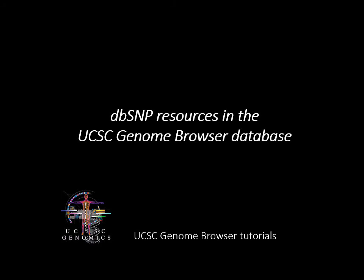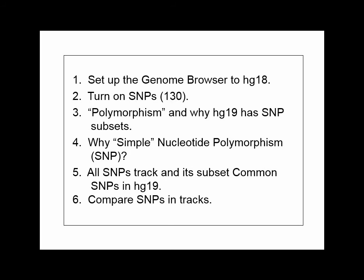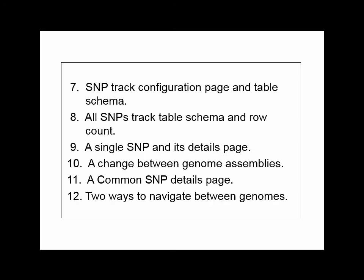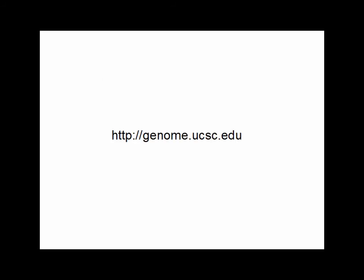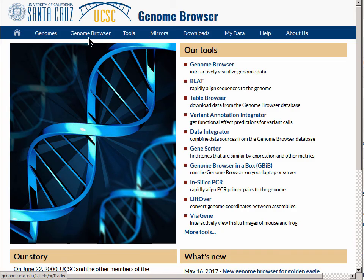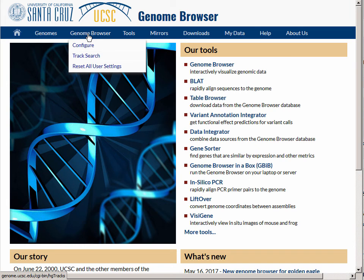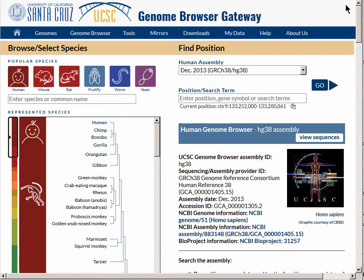Today we will discuss some of the variation data from dbSNP as displayed on the UCSC Genome Browser. We will start at genome.ucsc.edu at the main browser page and we will reset all user settings, which brings us to the most recent genome assembly, HG38.